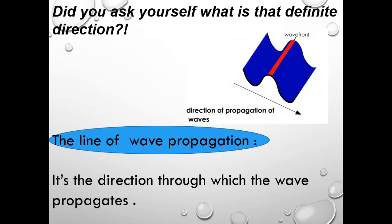Now we ask: what is the definite direction? Looking at this figure, we see the movement of the water molecule during its movement. The direction of propagation of the wave is considered the line of wave propagation. The line of wave propagation is defined as the direction through which the wave propagates.